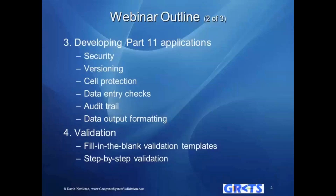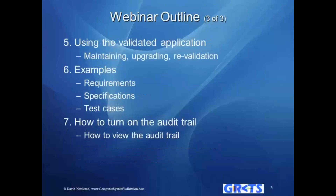We talk about how to format the data outputs to make it very user-friendly, so users understand if they're out of range or if there's some sort of error condition. Validation follows fill-in-the-blank templates that you can use for any kind of COTS, commercial, off-the-shelf software validation, and we go through them step-by-step so you understand what documentation you have to produce. Then we talk about how to use the validated application — how to protect the original file, how users save the data, which automatically triggers the audit trail to write. We also cover how to upgrade, make minor or major changes, and what the revalidation process is.